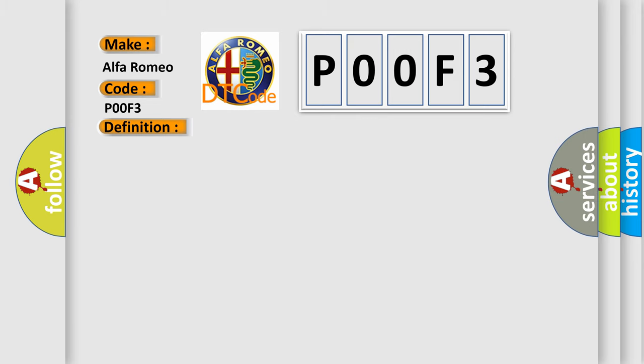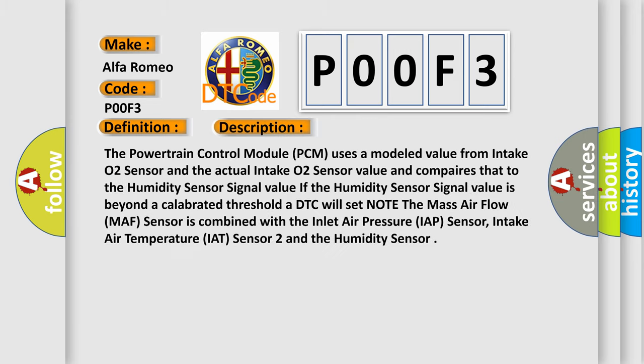And now this is a short description of this DTC code. The powertrain control module PCM uses a modeled value from intake O2 sensor and the actual intake O2 sensor value and compares that to the humidity sensor signal value. If the humidity sensor signal value is beyond a calibrated threshold, a DTC will set.